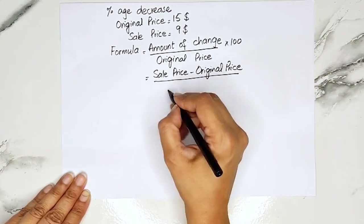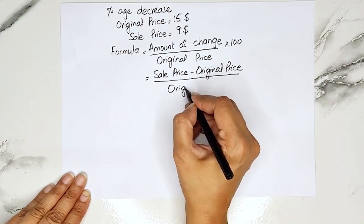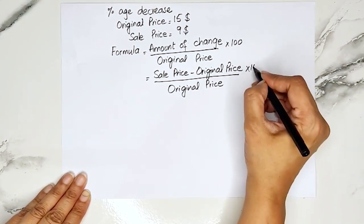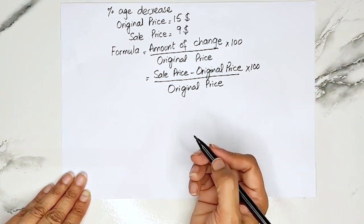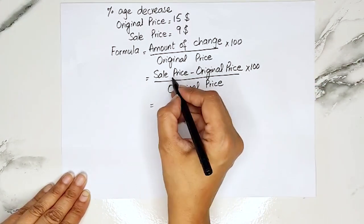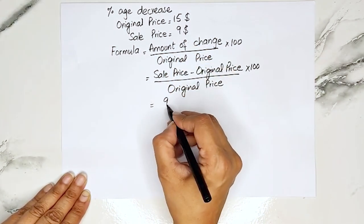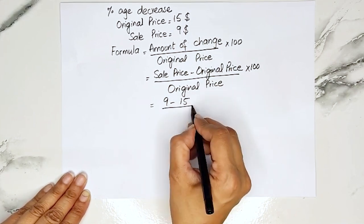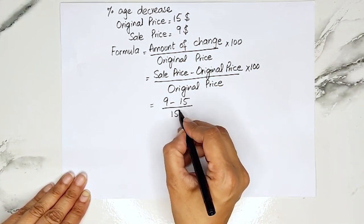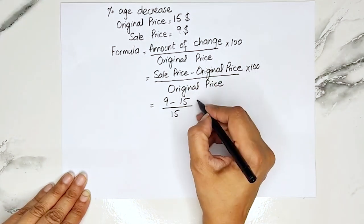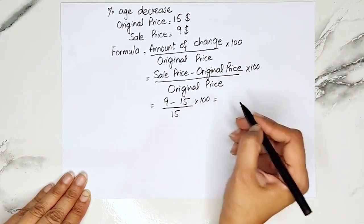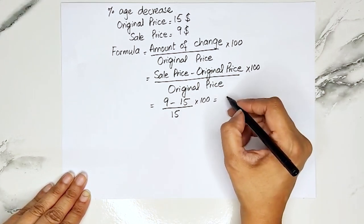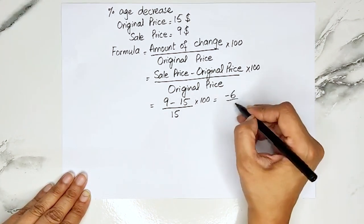So it is: (sale price minus original price) divided by the original price, multiplied by 100. We are multiplying by 100 because we have to find the percentage. The sale price is $9 and the original price is $15, so: 9 minus 15, divided by 15, multiplied by 100.